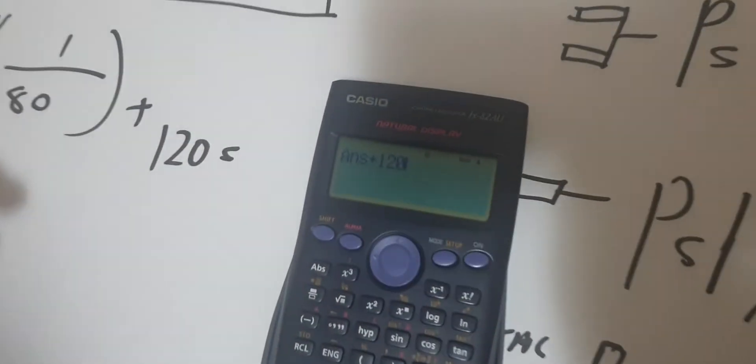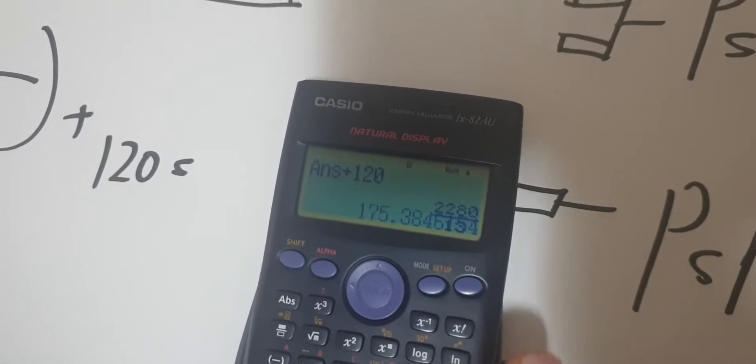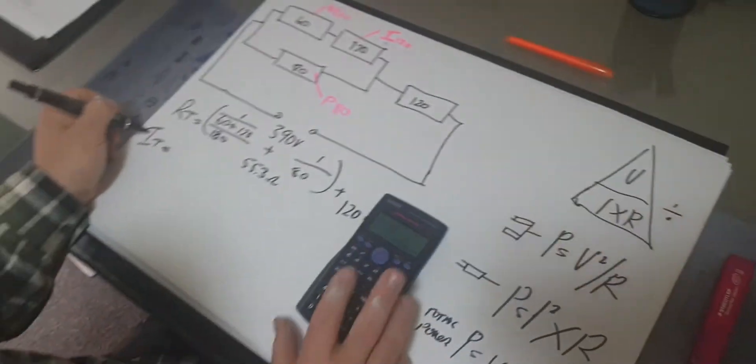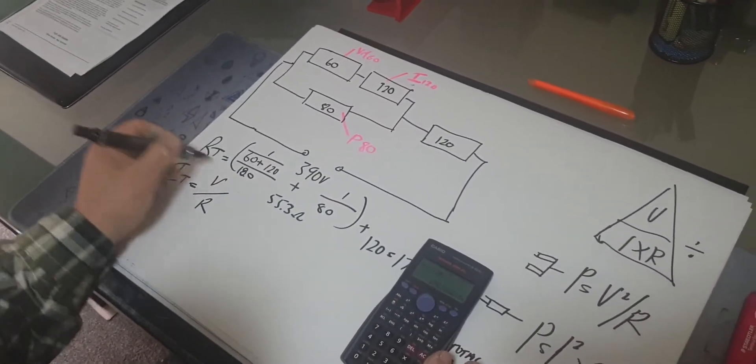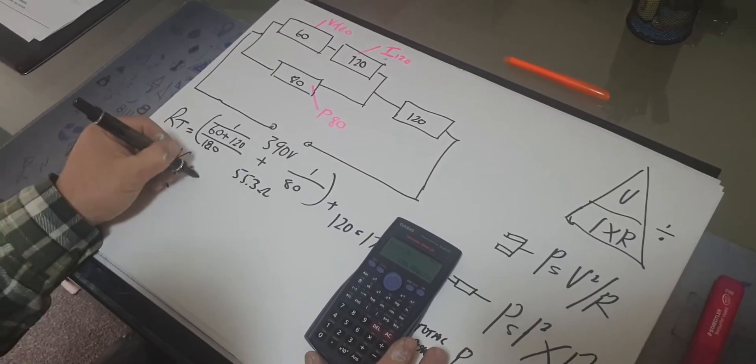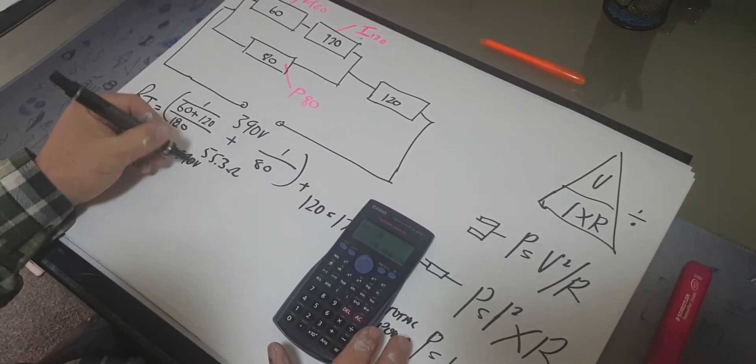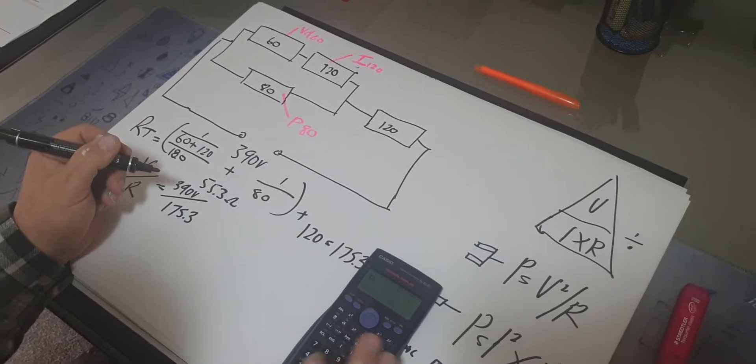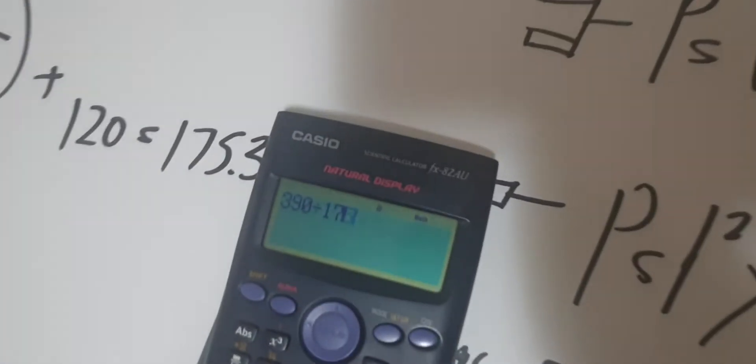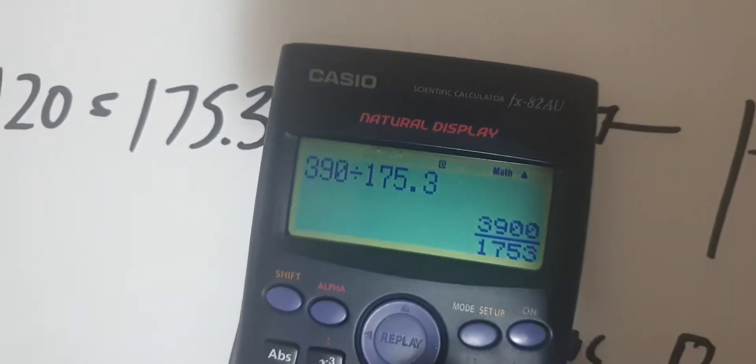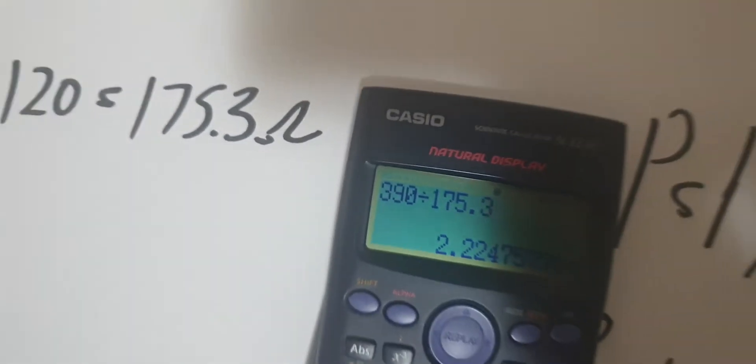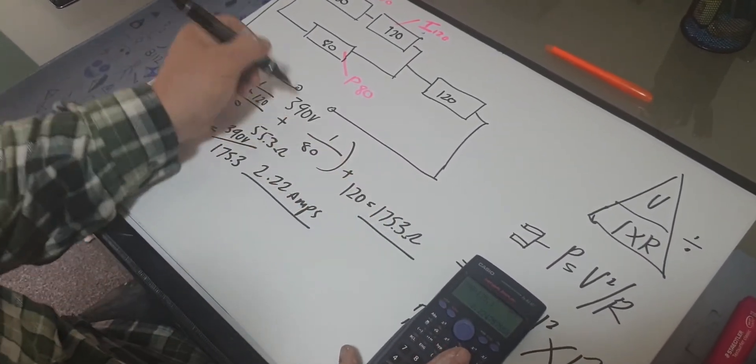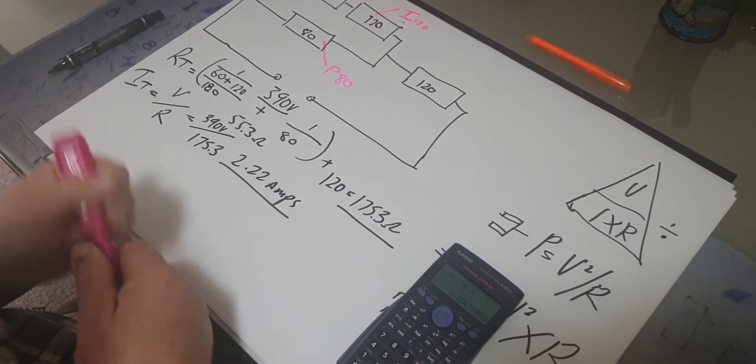Plus the 120 equals a total of 175.3 ohms total. Now total current, V over R - always putting the formula down, formula identifies what you're working out. 390 volts divided by 175.3 equals 2.22 amps.